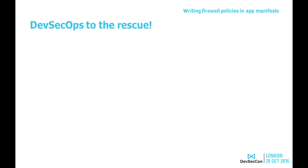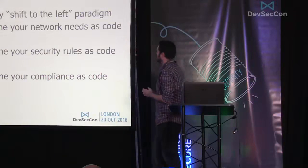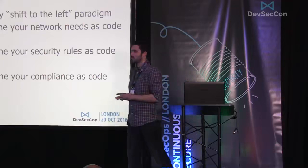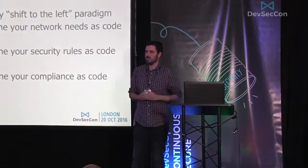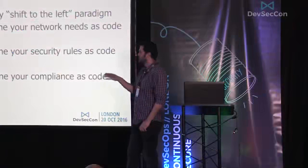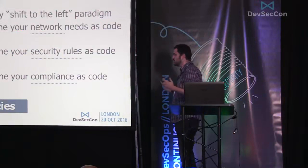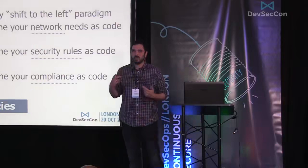DevOps to the rescue. Why not apply the same ideas we're applying on software delivery to infrastructure and network delivery? In application delivery, devsecops says: apply the shift-left paradigm — test as soon as possible. So if I have to test my network needs, the first thing I have to do when defining the application is to define my network needs. And if I can define it as code, that's better. Secops: same thing — define your security rules as code. And risk: define your compliance as code. When we say network security rules and compliance, the first word that comes to mind is firewall policy.